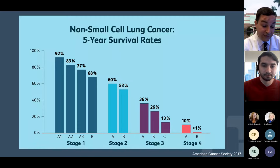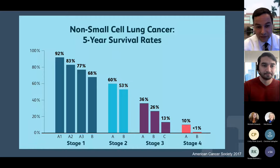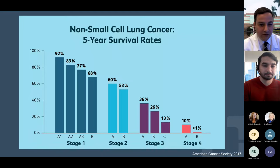I want to start with the caveat that this is data from the American Cancer Society in 2017. Through research and innovation, every year, every month, every day we're finding new treatments and new therapies for lung cancer, so these numbers are likely higher now. That being said, the trend is still the same — as you go within a stage from A to B, or as you go from stage one to stage two, three, or four, your long-term five-year survival rate decreases.